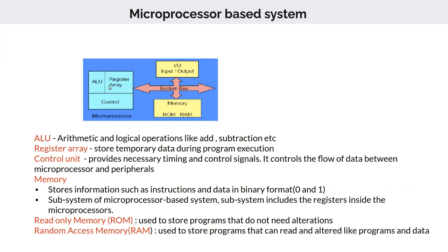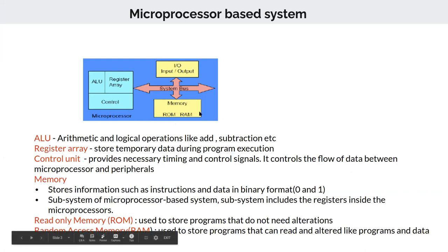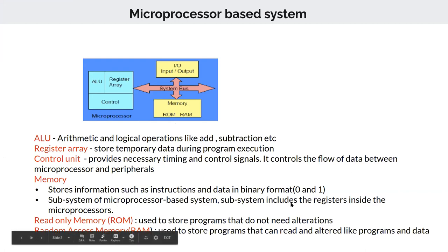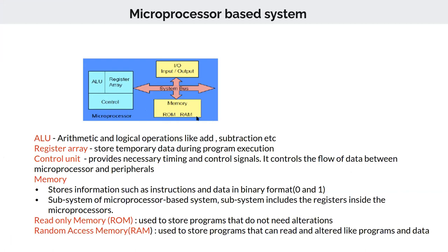The register array contains many registers. The microprocessor we are going to study — the Intel 8085 — has nearly 14 temporary registers for storing data during program execution. The control unit provides necessary timing and control signals and controls the flow of data between the microprocessor and peripherals. Memory stores information such as instructions and data in binary format — zeros and ones.